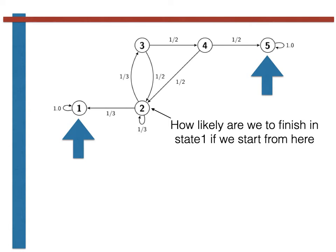We know that finishing in state 1 is not guaranteed as the process is random and there is a chance that we will finish in state 5. It seems likely that finishing in state 1 is more likely than finishing in state 5 if we start from state 2, but we have no way of knowing this for sure if we do not calculate the probabilities.